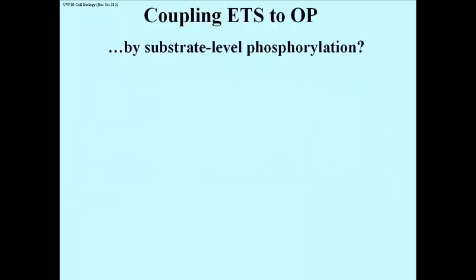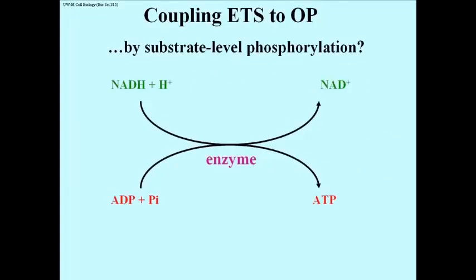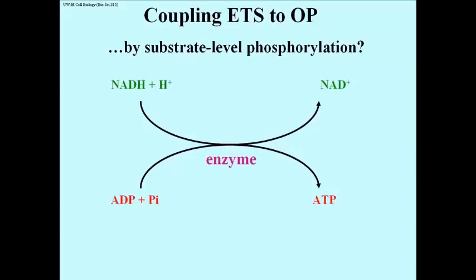This schematic suggests a simple mechanism predicting an enzyme that would catalyze a substrate-level phosphorylation of ADP coupled to a very spontaneous redox reaction in the electron transport system, much like the coupled reactions we saw in glycolysis. Despite looking for such enzymes, none were found.